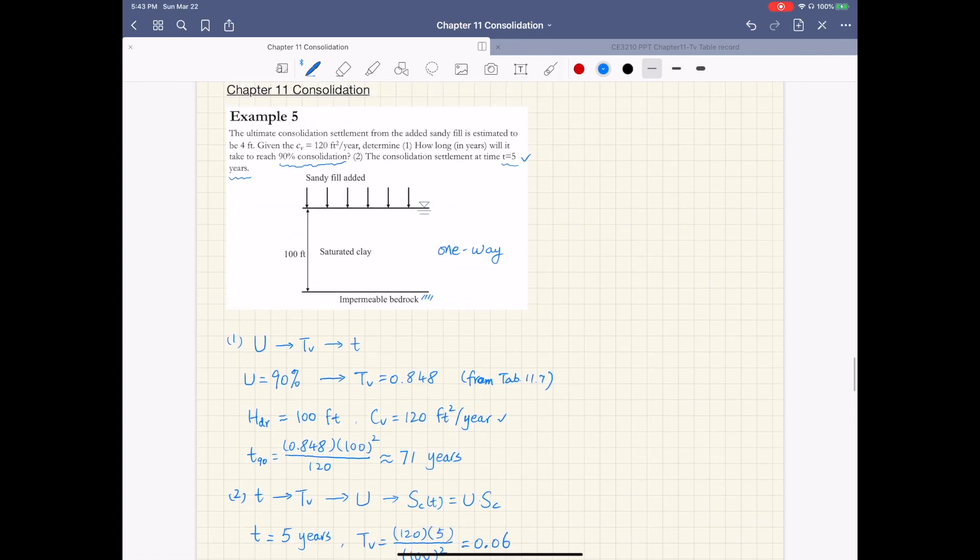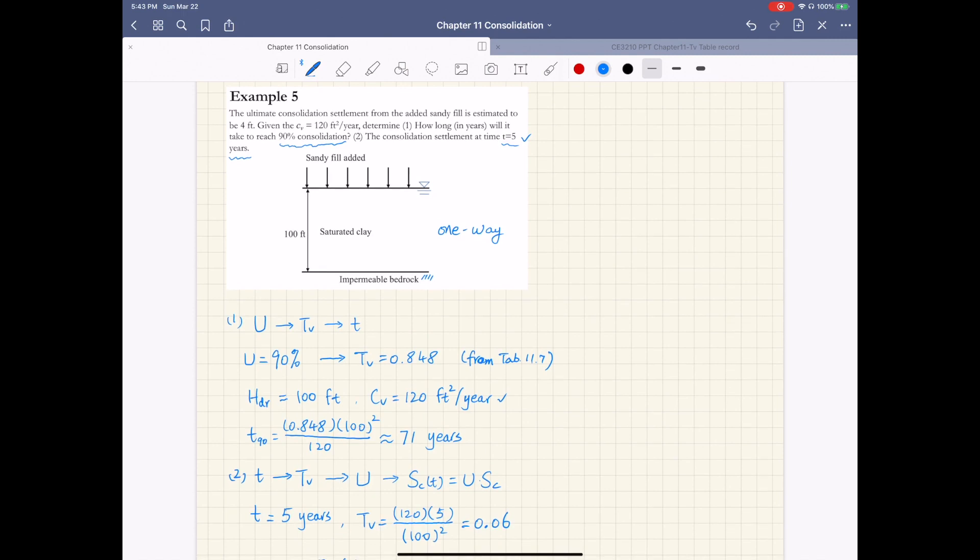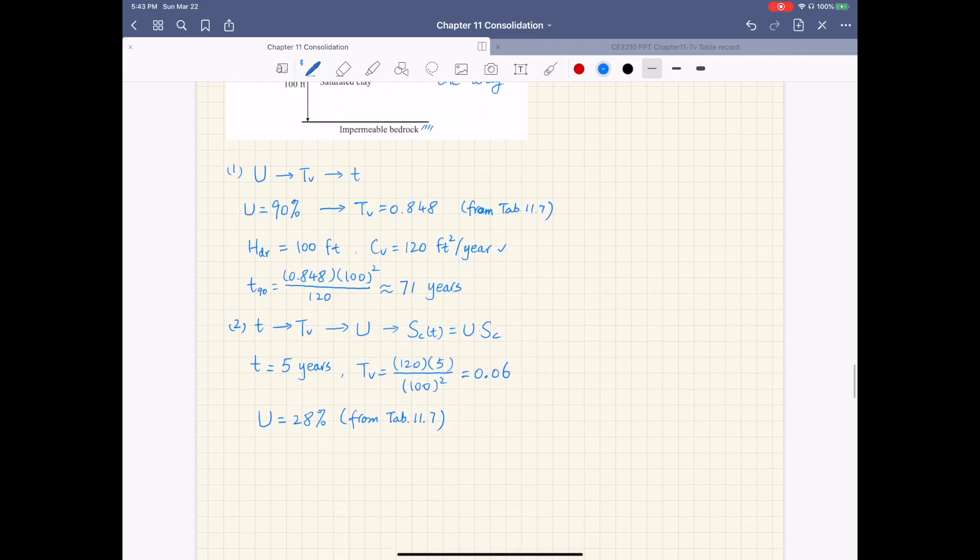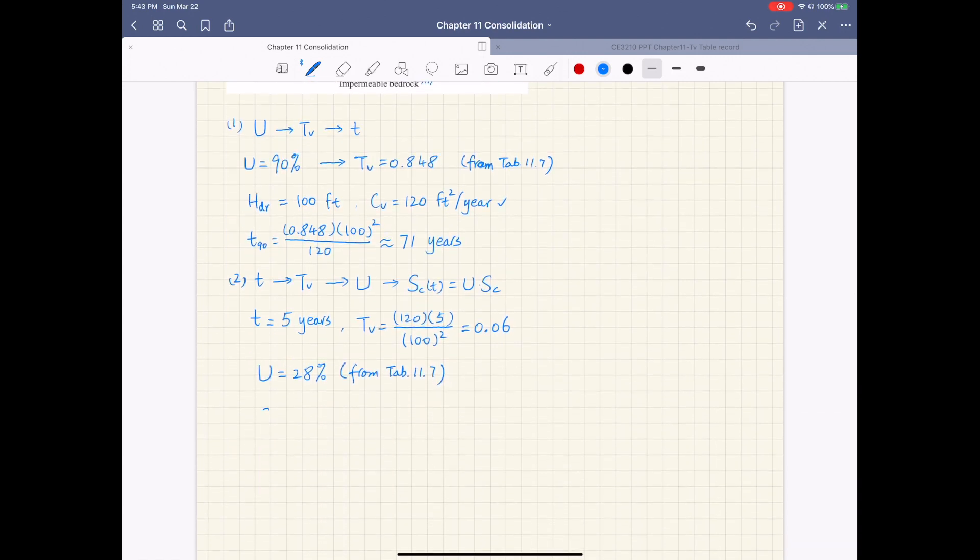And for this problem, we're actually given this final or ultimate consolidation settlement of 4 feet. So we know Sc, so we can directly calculate the settlement at t equals five years as 0.28 - that's 28% - times the final settlement, which is 4 feet. And if you plug in numbers, this gives us 0.28 times 4, which is about 1.1 feet.